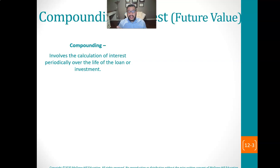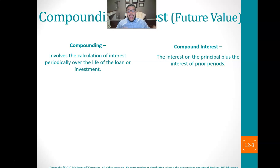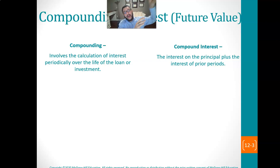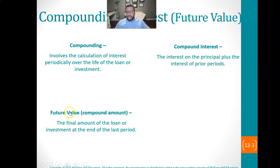Compounding involves the calculation of interest not just spread out over five years — you're actually stopping and compounding and counting your interest. You're calculating interest periodically, and your future interest is based upon that accumulated interest. Compound interest is interest on the principal as well as the previous interest. If you're compounding once a year, at the end of year one you calculate your interest, and that principal plus interest goes back into the investment. The new interest for year two is calculated on top of that. The future value or compound amount is the final amount of a loan or investment at the end of the last period.